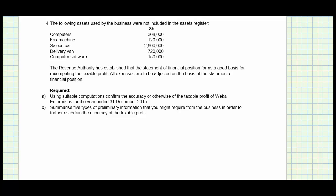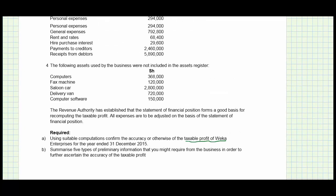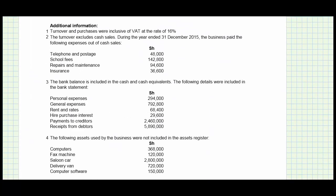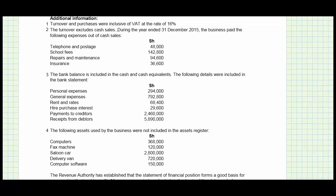Let's deal with the first part — using suitable computations, confirm the accuracy or otherwise of the taxable profits of Wekal Enterprises for the year ended 31st December 2015. My approach in the tax paper is to first start by looking at the notes, the additional information, and only after I've worked out what they mean will I be able to answer the requirements. Note number one: turnover and purchases were inclusive of VAT at 16%, so we have to exclude the VAT. Note number two: the turnover excludes cash sales.